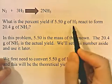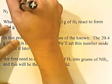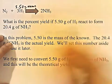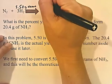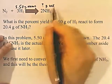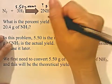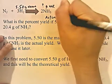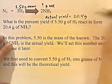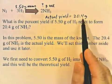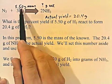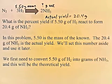We have 5.50 grams of H2 as the known, and we're solving for the unknown — how much NH3 we should get. When we solve for this unknown, that will be the theoretical yield. The actual yield from the experiment is 20.4 grams, which we set aside for later. For now, we treat 5.50 grams of H2 as the known and use it to find the unknown, just like a regular mass-mass problem.